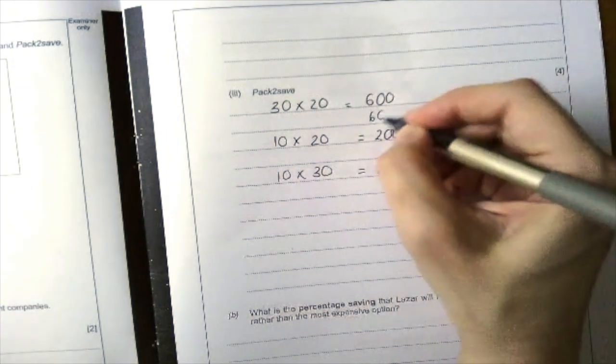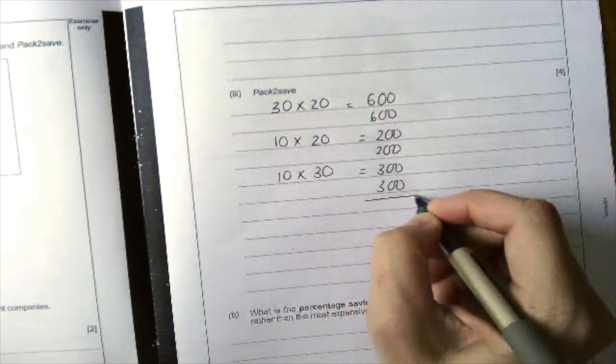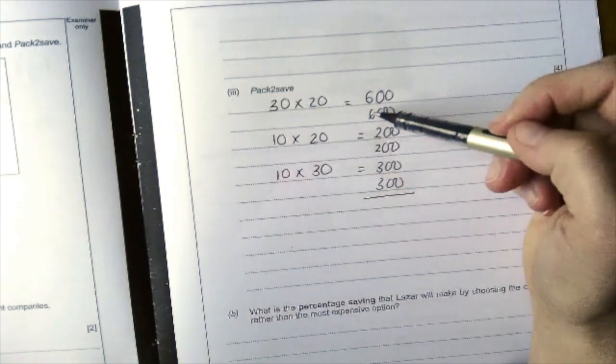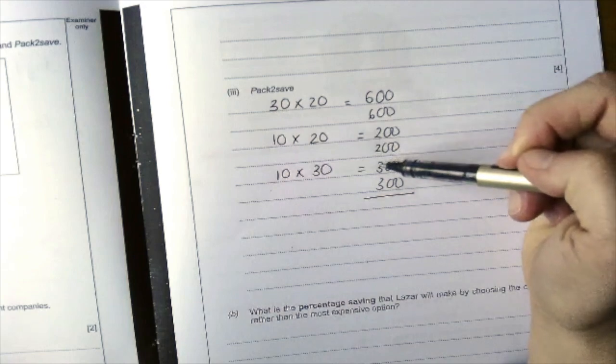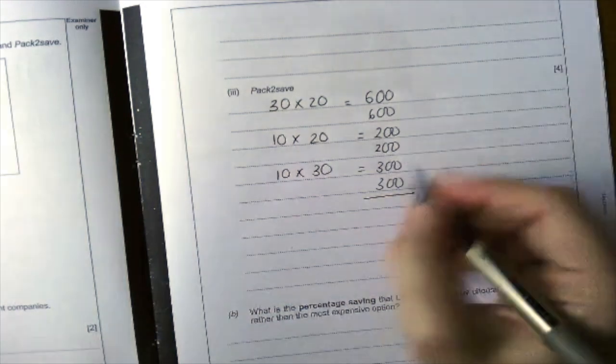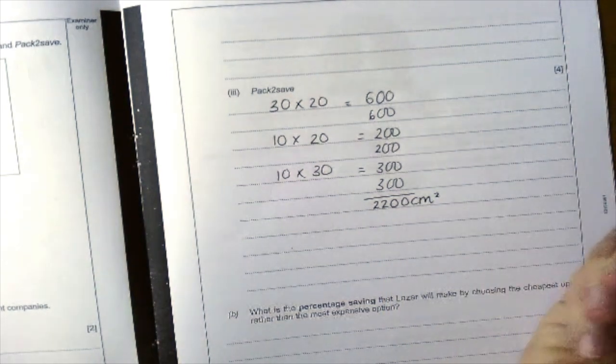So I've got double the amount. So in total we've got 6, 12, 14, 16, 17, 18, 19, 22. So it's 2200 centimeters squared.